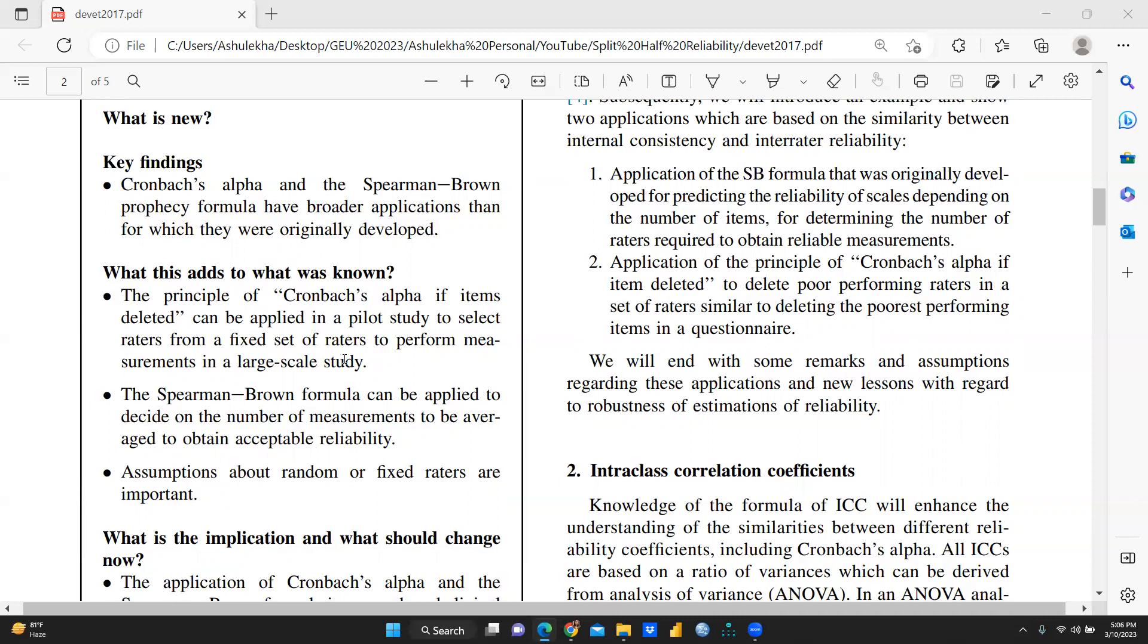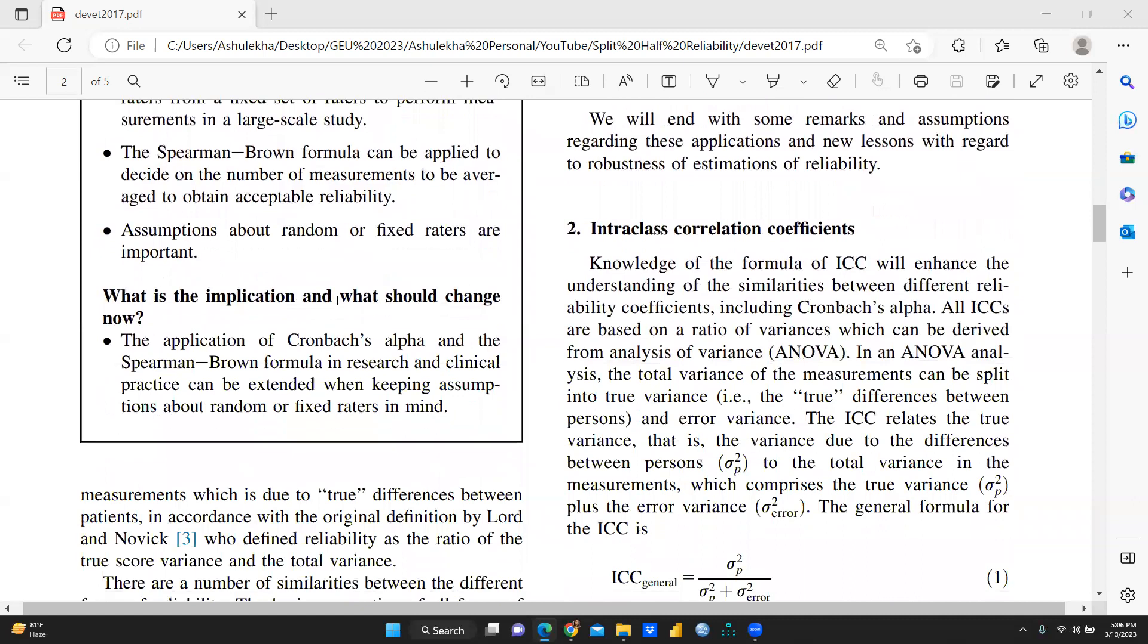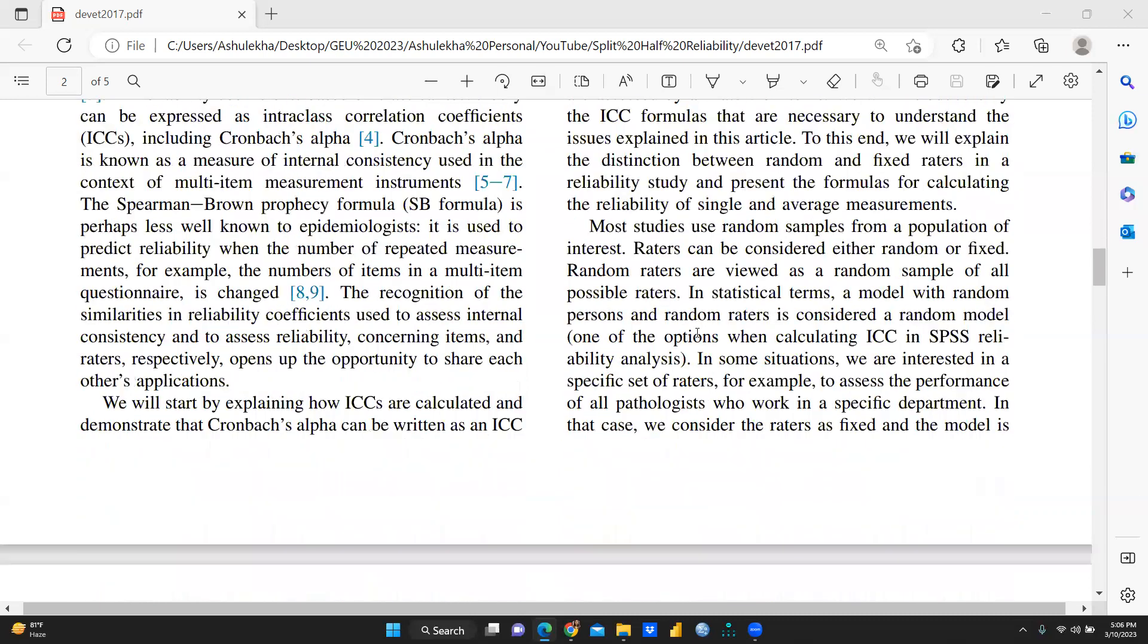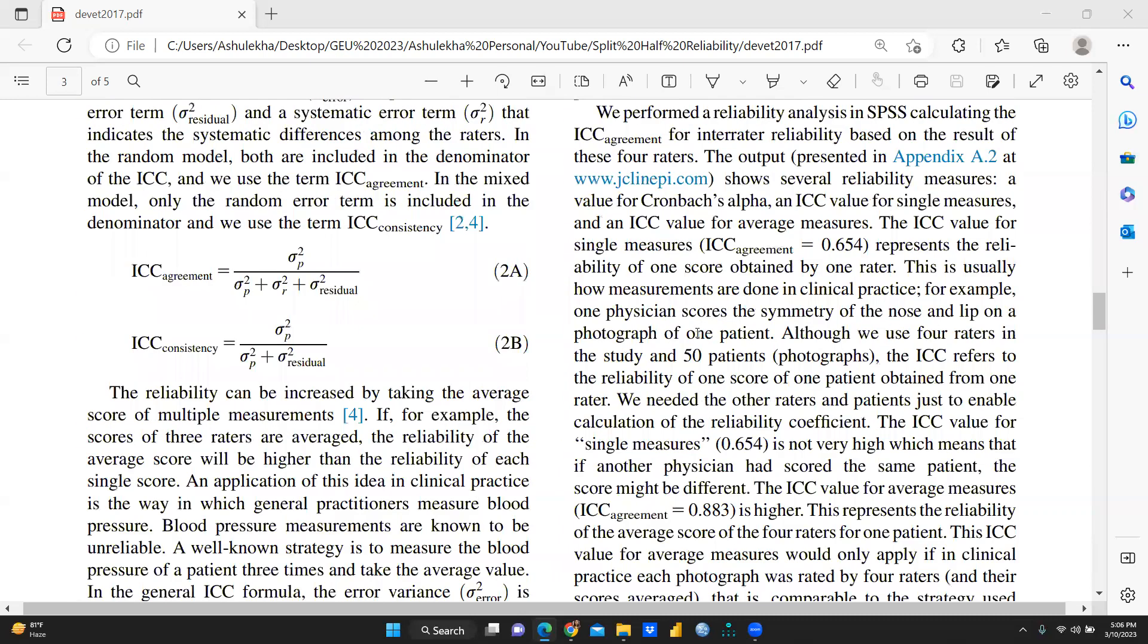So assumptions basically about random or fixed raters are important. And what are the implications and what should change now? So application of Cronbach's alpha and the Spearman-Brown formula in research and clinical practice can be extended when keeping assumptions about random or fixed raters. So you understand. And the assumption is when we are taking random or we are taking fixed raters. So accordingly, we have to change. Here is inter-class correlation coefficient formula is already given.